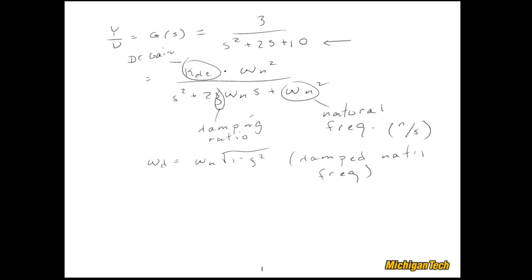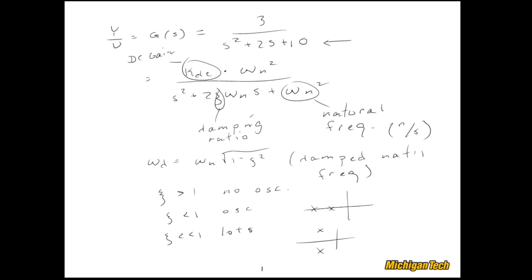What we can do is characterize the step response of the system according to ζ. Specifically, if ζ is greater than 1, assuming the system is stable, there would be no oscillation — you have two real poles. It gets more interesting if ζ is less than 1: then you have oscillation, and for that case you have a couple of complex poles. And if ζ is much less than 1, then you have lots of oscillation. That's one way to characterize the step response of general second-order systems with no zeros.